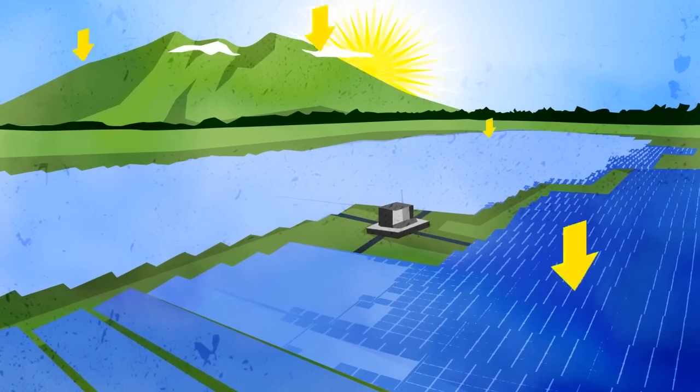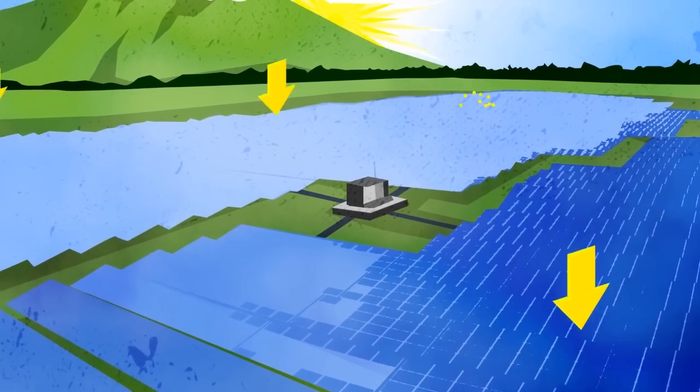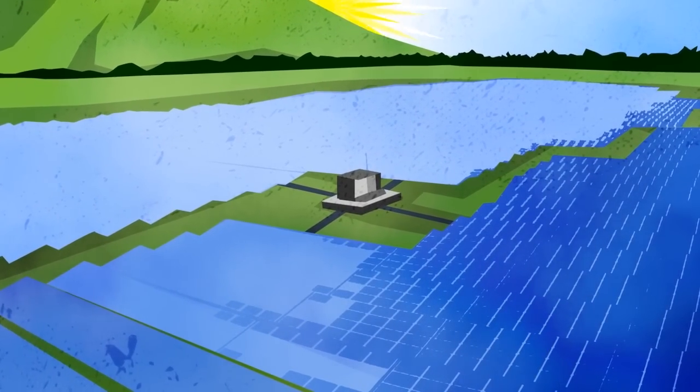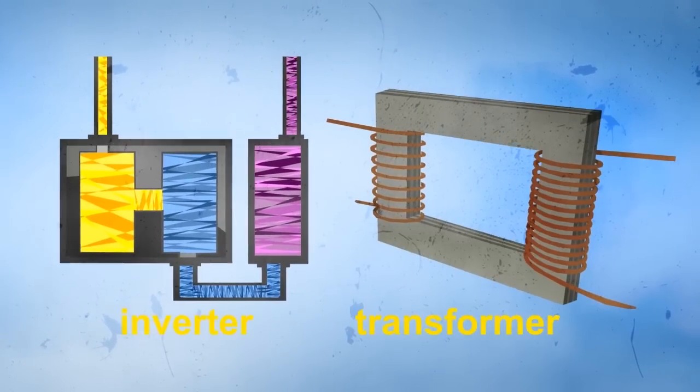But this electricity is still not ready for public use. It needs to be converted to match the type of electricity needed by home appliances. That's why solar power plants have inverters and transformers.